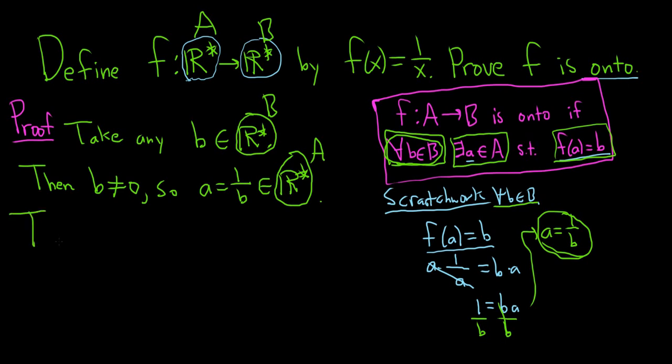So then f of little a, well, what is that? That's just 1 over a. So now we use our definition of a. It's 1 over, well, a is 1 over b. So it's 1 over 1 over b. Well, division is multiplication by the reciprocal. So it's 1 times b over 1. So it's equal to b.